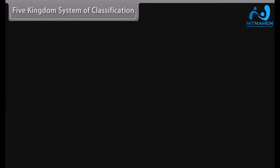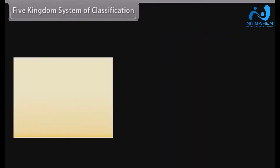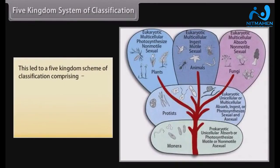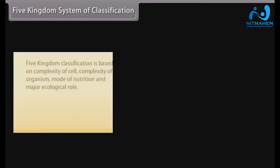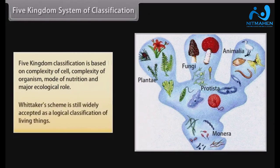Five Kingdom System of Classification. In 1969, the American ecologist Robert H. Whittaker proposed that fungi differ enough from other microorganisms to justify calling them a separate kingdom. This led to a five kingdom scheme of classification comprising Monera, Protista, Fungi, Plantae, and Animalia. Five kingdom classification is based on complexity of cell, complexity of organism, mode of nutrition, and major ecological role. Whittaker's scheme is still widely accepted as a logical classification of living things.